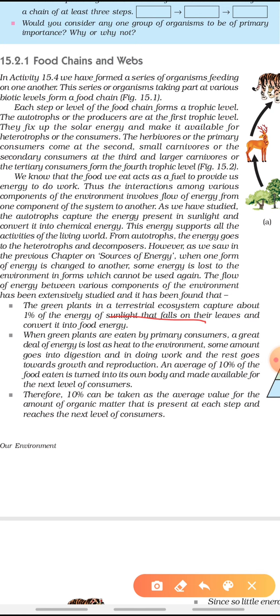Green plants in a terrestrial ecosystem capture about 1% of the energy of sunlight that falls on their leaves and convert it to food energy. In our land ecosystem with green plants, forests, and trees, they use 1% of the total sunlight falling on their leaves to convert it into food energy or chemical energy.